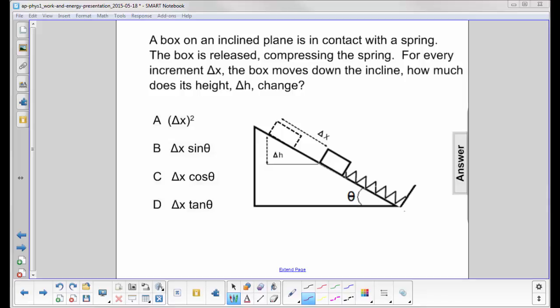A box on an inclined plane is in contact with the spring. What we really have here is the box starts up here in the dashed line, the spring extends all the way to here.